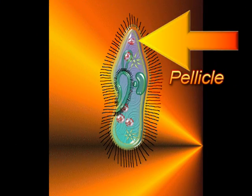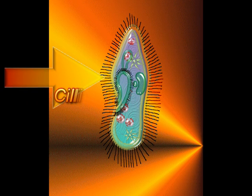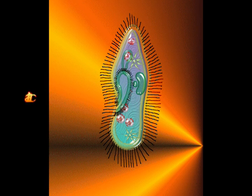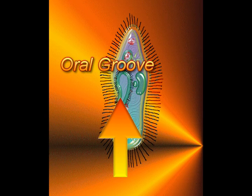The pellicle is the thin-skinned film or outer membrane. Cilia are the moving hair structures used to move about and scoop food. The oral groove captures food to be passed to the mouth.